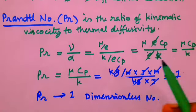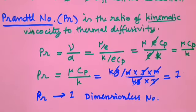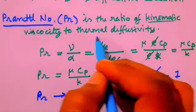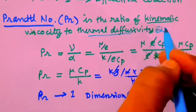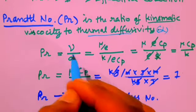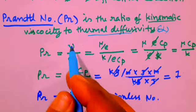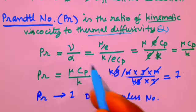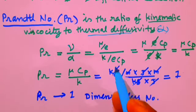The Prandtl number is the ratio of kinematic viscosity to thermal diffusivity alpha. So Pr is equal to nu upon alpha, where nu is equal to mu upon rho and alpha is equal to k upon rho cp.